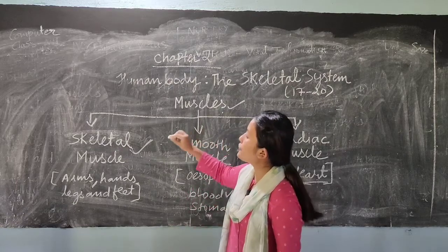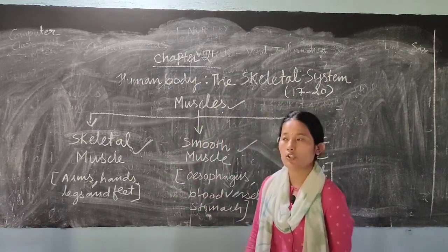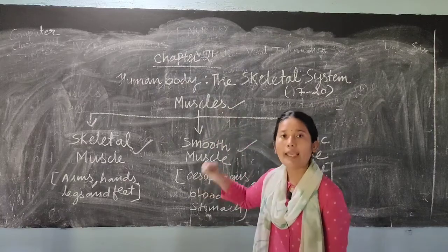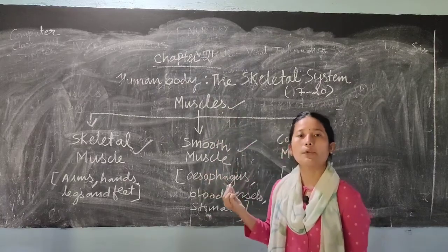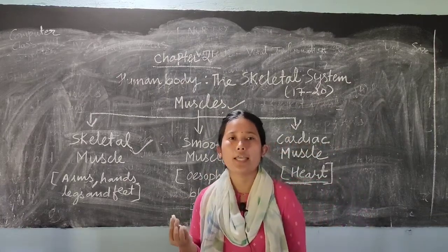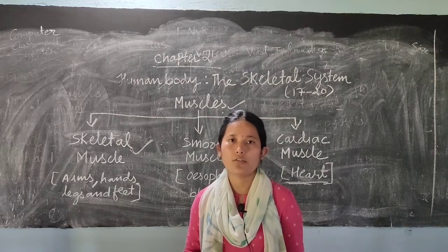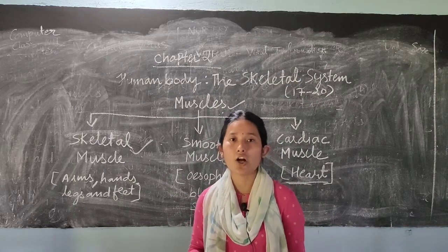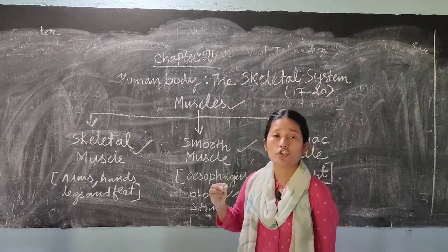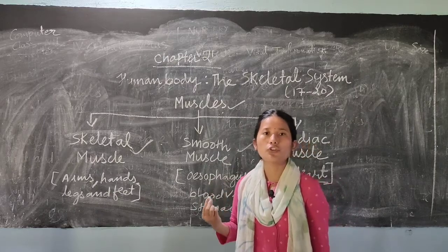So these are the different types of muscles. Muscles help in bringing about movement in the human body and in any animal. That's all about joints and muscles for today.